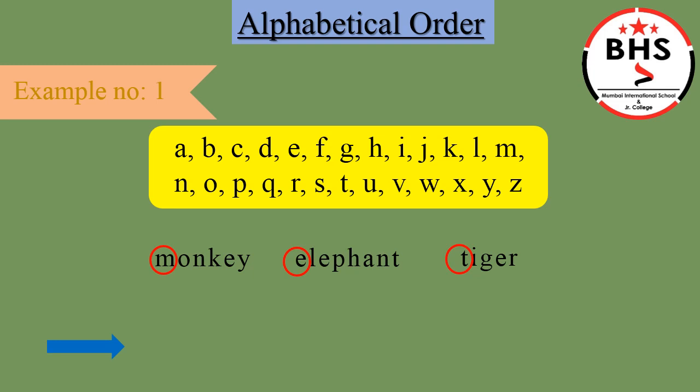Now, the first letter of the English alphabet is A. Is there any word starting with A? No. Is there any word starting with B? No. Is there any word starting with C? No. Is there any word starting with D? No. E — is there any word starting with E? Yes! We have a word elephant, which is starting with E.